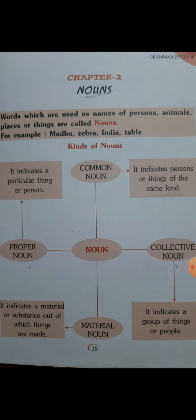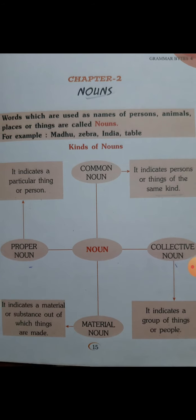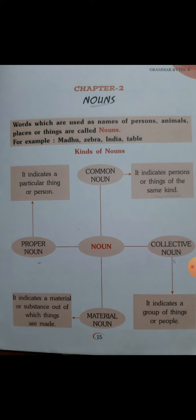So again, let me read the definition of noun: words which are used as names of person, animal, place or things are called nouns. For example: Madhu, zebra, India and table.